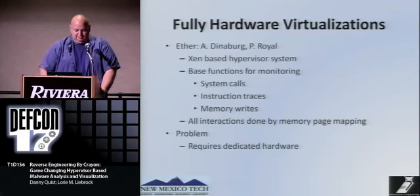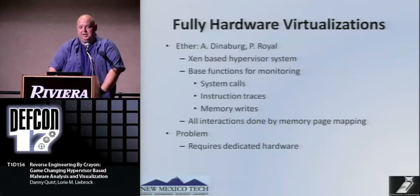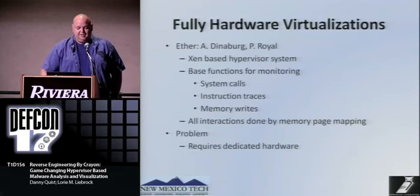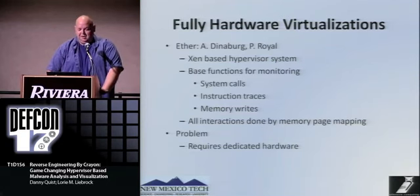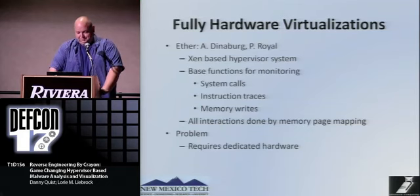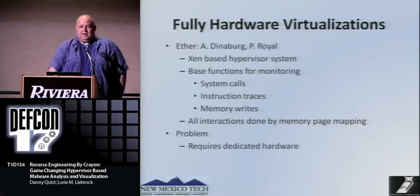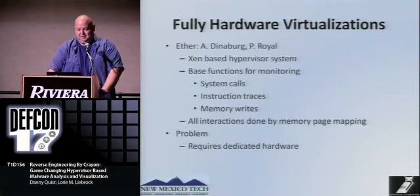Now we get into the awesome. There's a fully hardware virtualization monitoring system called Ether, built by Artem Dinaburg and Paul Royal from Georgia Tech. This is a Xen-based hypervisor system. Ether monitors system calls, instruction traces, memory writes, and all interaction with the OS via the shadow page table inside the Xen hypervisor. The requirement for dedicated hardware isn't really a problem — what it buys you is an actual VM environment you can use to restore state, making it very flexible.